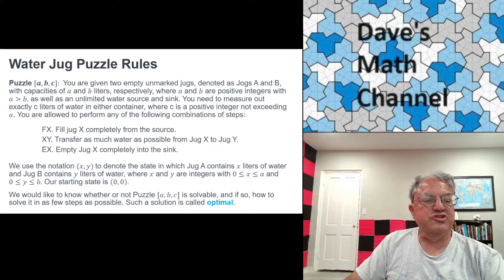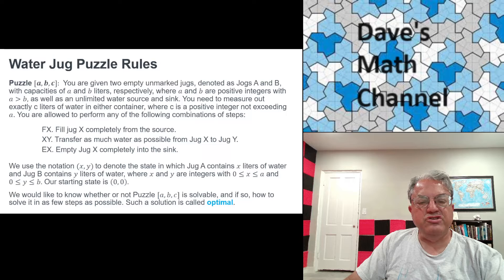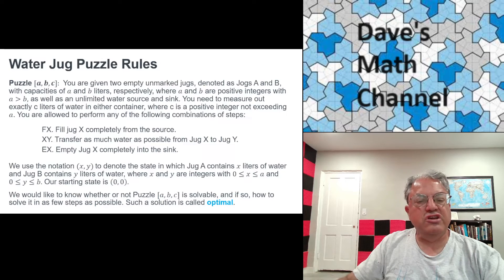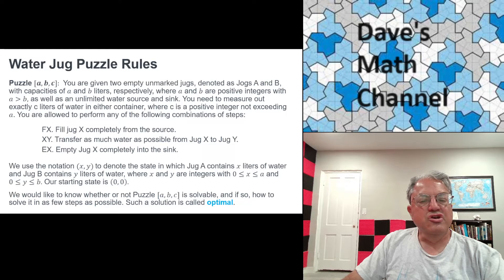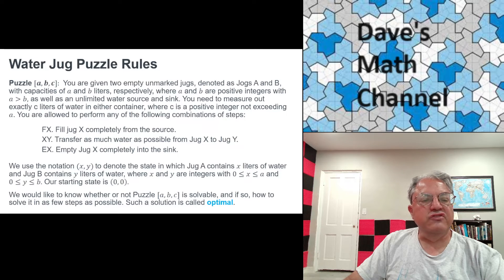And then we can keep track of the states of the jugs, how much water is in each jug, with the ordered pair little x comma little y, where little x is the number of liters of water in jug A, and little y is the number of liters of water in jug B. X and Y are both non-negative integers, with x less than or equal to a and y less than or equal to b.